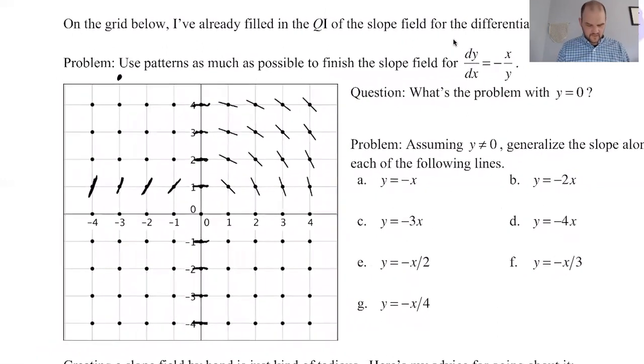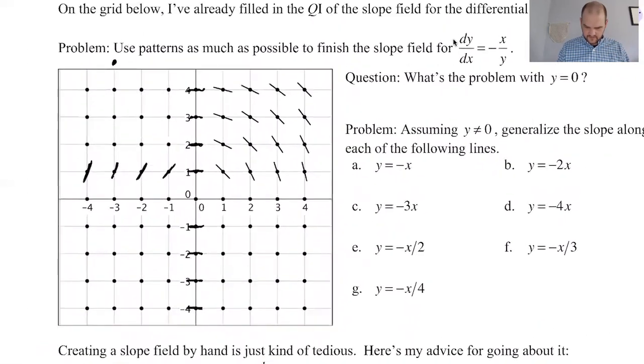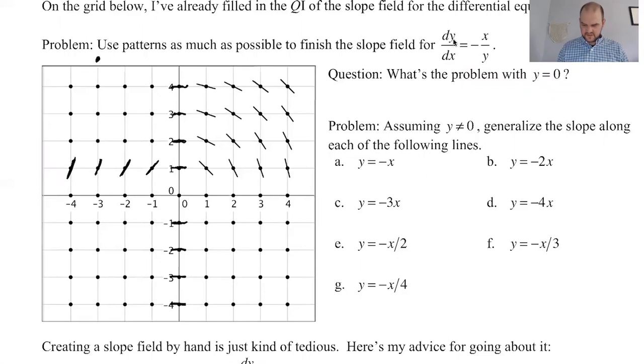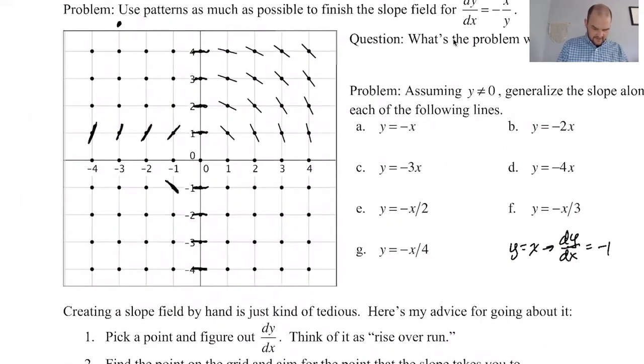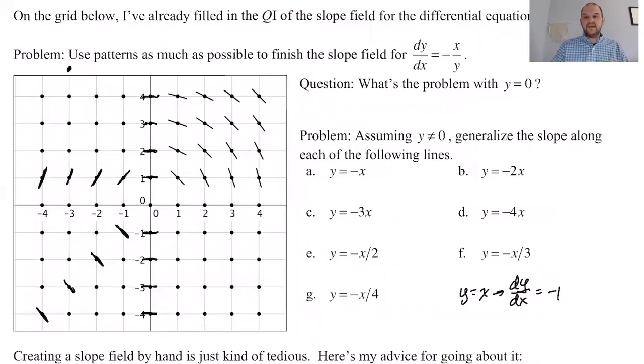I'm gonna look along the line y equals x. If y equals x then dy/dx is gonna simplify to negative x over x which is just negative one. So the slopes are always negative one along y equals x. How about y equals negative x. If y equals negative x and dy/dx is negative x over y then the slope is always positive one. So I'll fill those in.